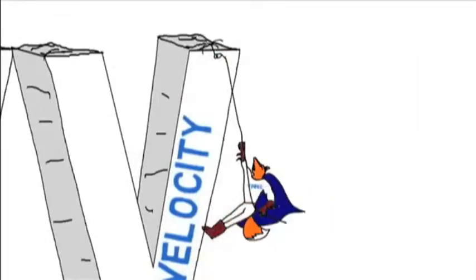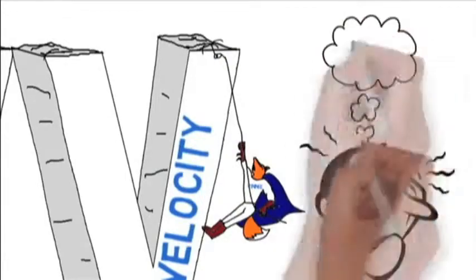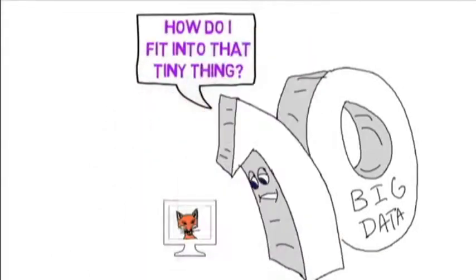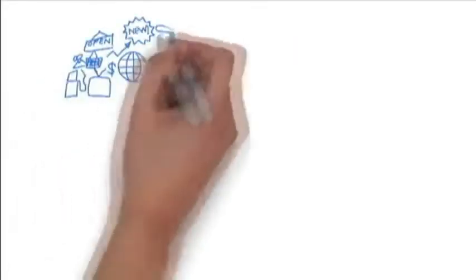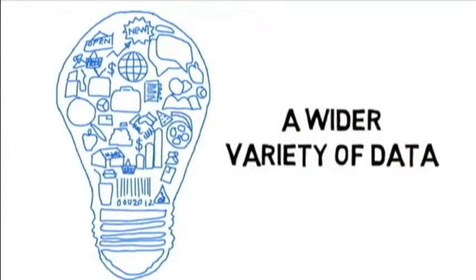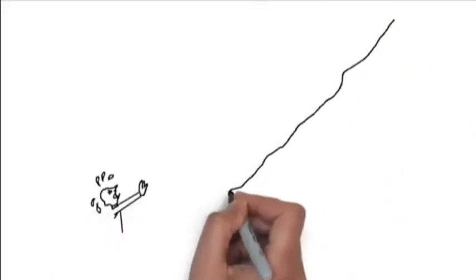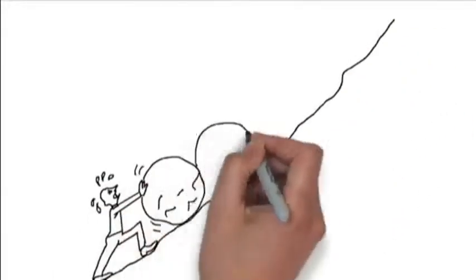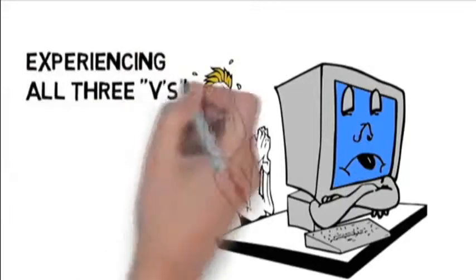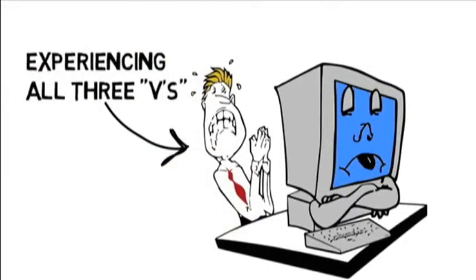These are big words that present some big challenges to business. Challenges like growing beyond the storage capacity with the sheer volume of data. The organization has grown and diversified so there's a wider variety of data than what was originally planned. More data flow is needed from computer to humans than ever before. The velocity of data needed exceeds the capabilities of an old antiquated system. It could be that you're experiencing issues with all three V's.